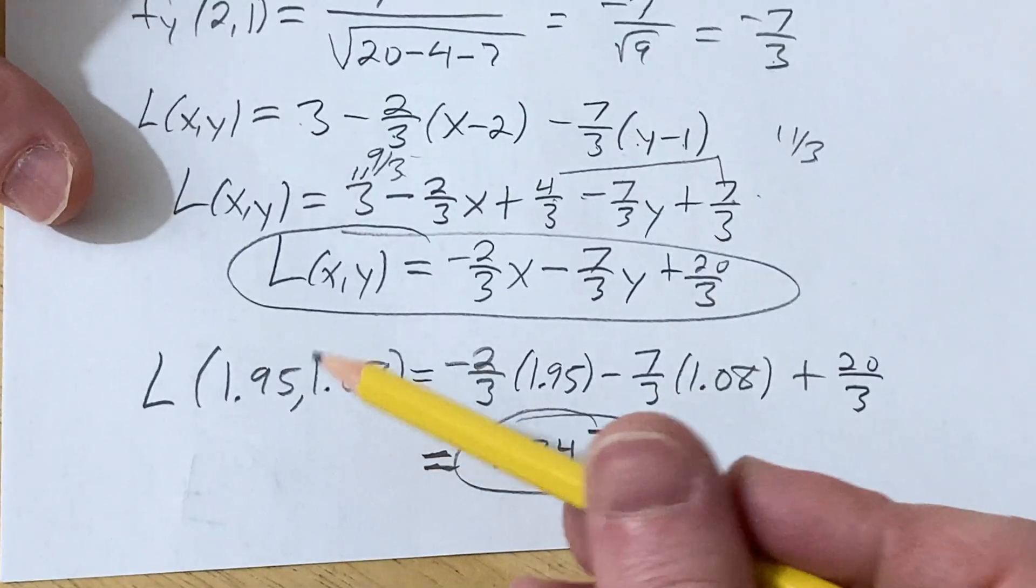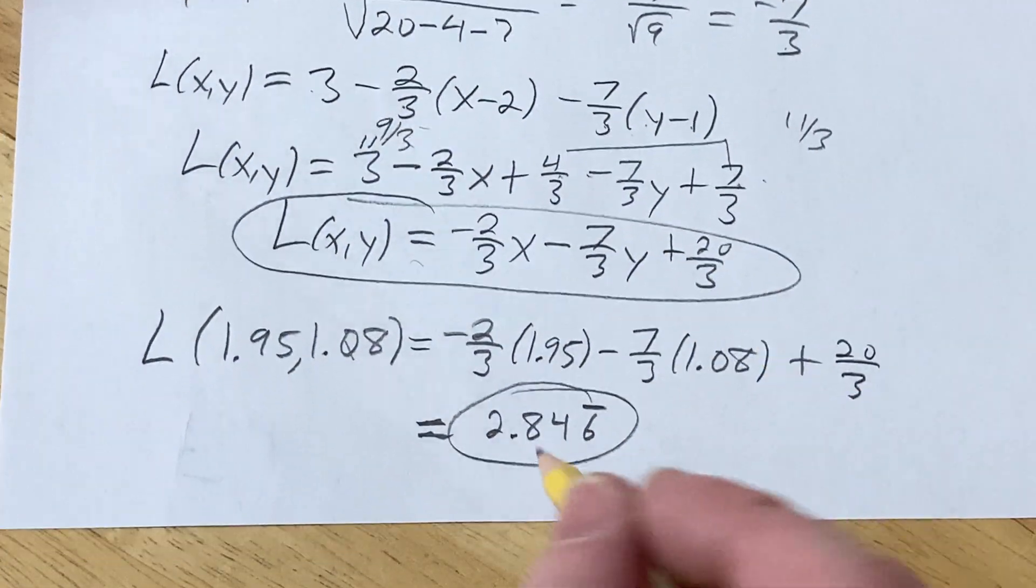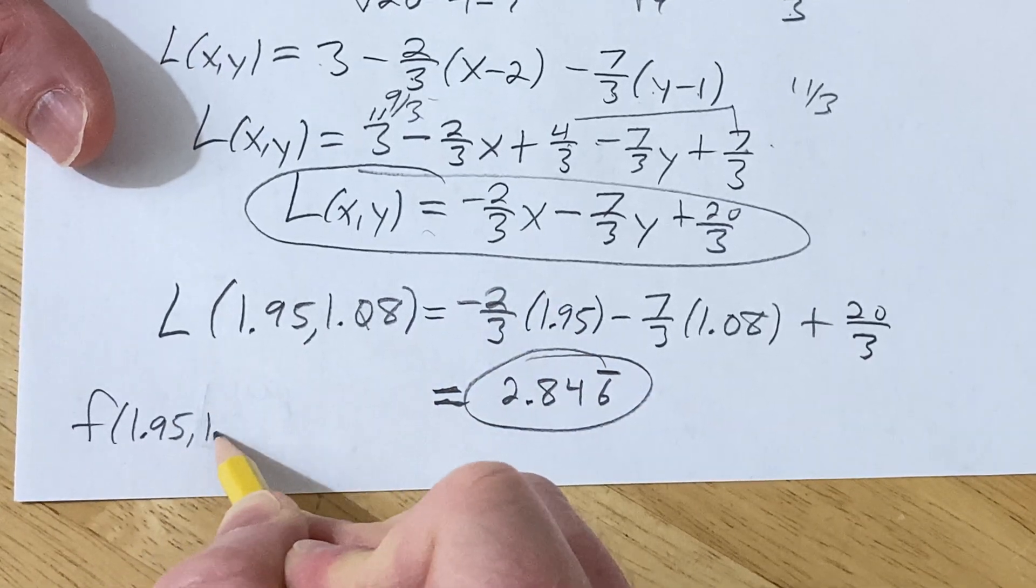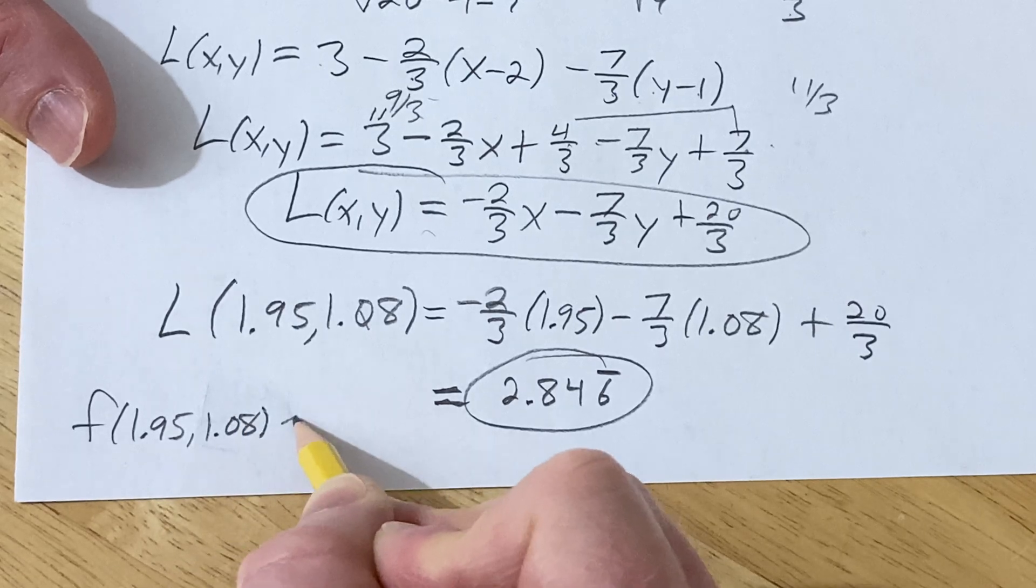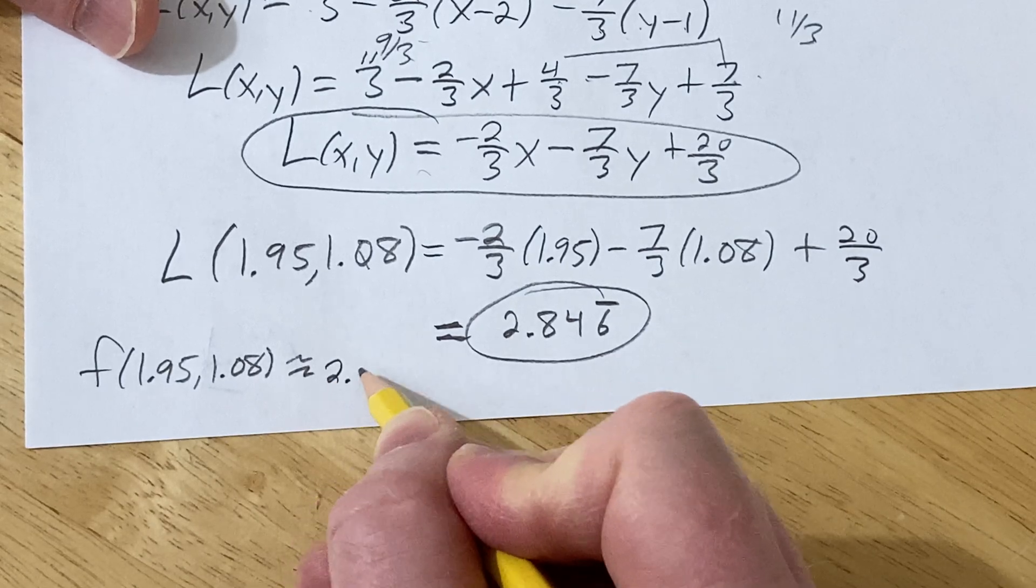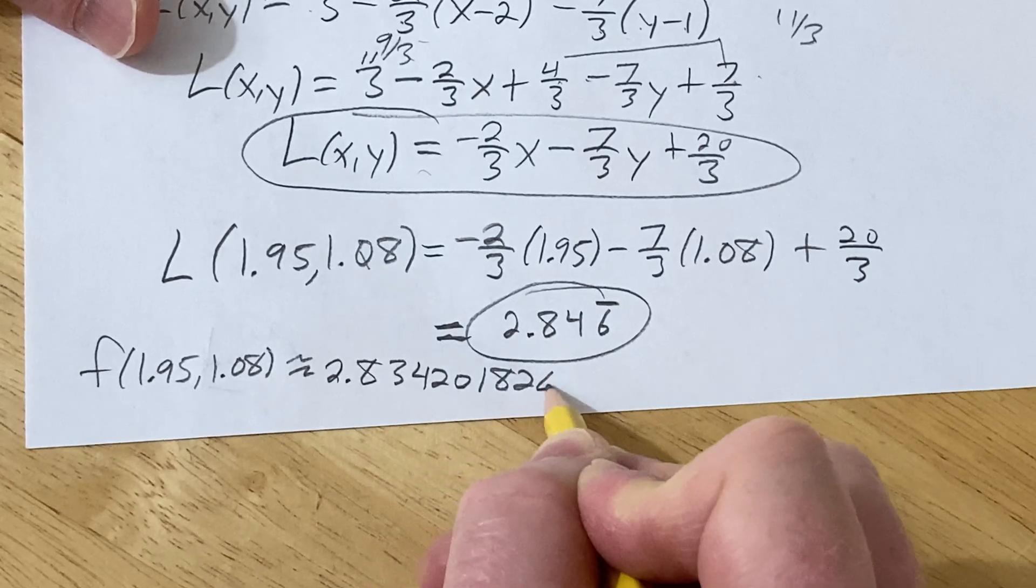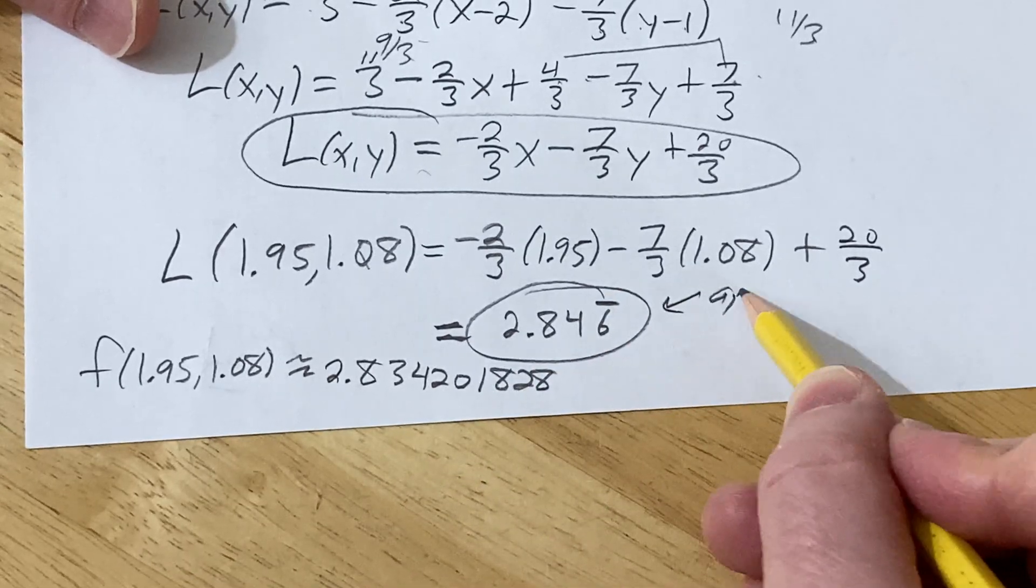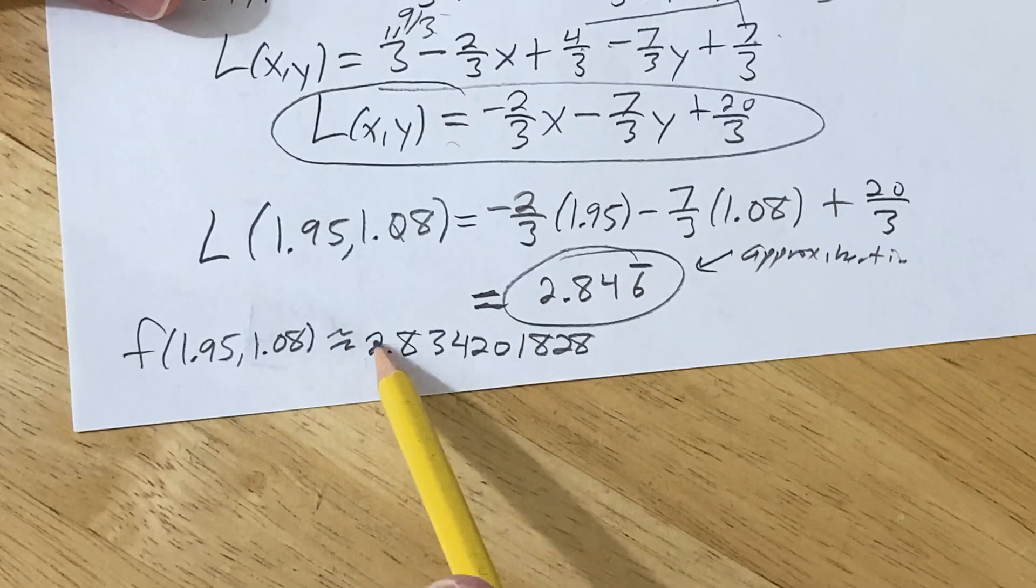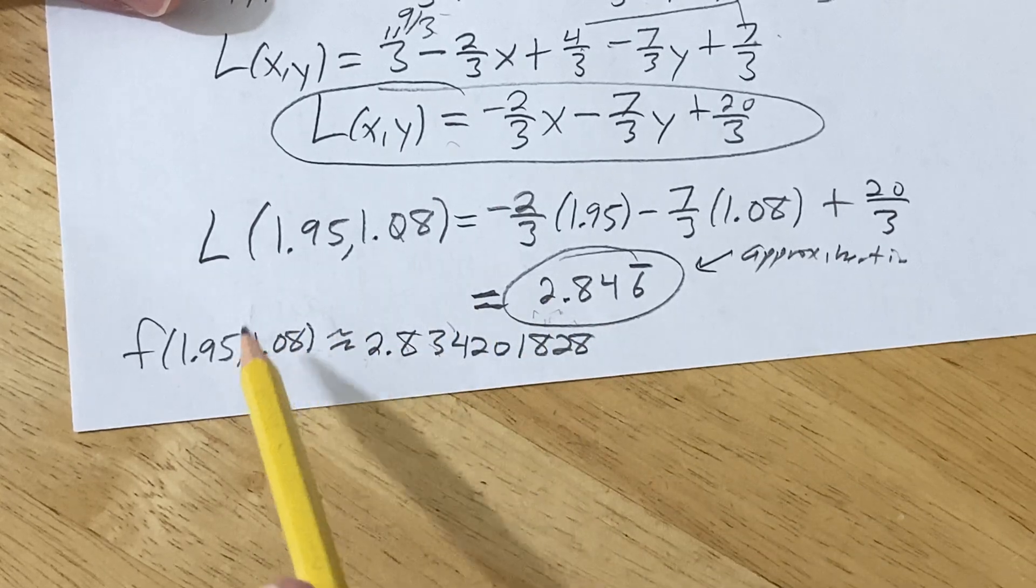So you basically take the numbers they give you, the decimal numbers usually, and you plug them in to your linearization or your linear approximation or your tangent line approximation. By the way, if you're curious, the actual function value I worked it out out of curiosity, is approximately, and hopefully I don't typo one of my decimals here, but it should be, you can check, 2.834201828. So this is the approximation, and this is what you get when you plug it into the function. So pretty close to the actual function value.